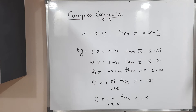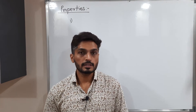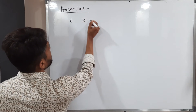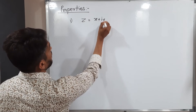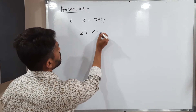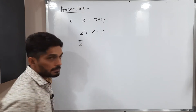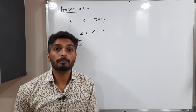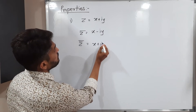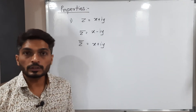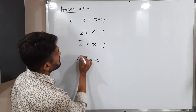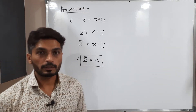Now let us discuss properties of complex conjugate. First property: if z equals x plus iy, then z-bar equals x minus iy. Taking the complex conjugate again — z-bar-bar — gives back x plus iy, which is the original number. So z-bar-bar is equal to z. This is a very important property.